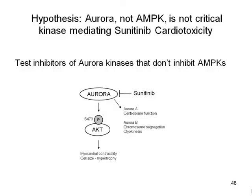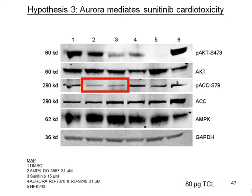Aurora is involved in mitotic spindle formation, centrosome function, as well as cytokinesis. But in the literature it also suggests that Aurora can phosphorylate AKT, which can modulate myocardial contractility as well as hypertrophy. By Western blot, I wanted to confirm that this signaling might actually be occurring. In the sunitinib AMBIT profile, sunitinib was not directly inhibiting AKT, so we hoped it was through downstream signaling. You can see clearly that there is inhibition of phospho-AKT, so I moved on.